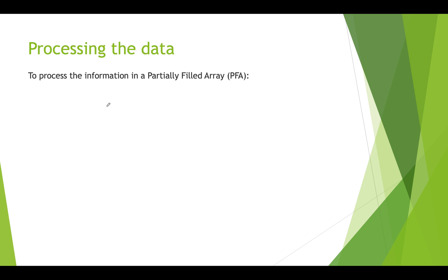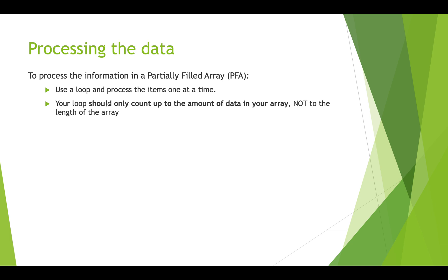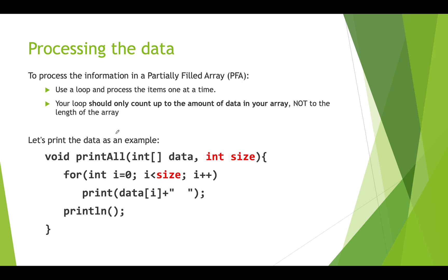Let's start with processing the data in a partially filled array. We use a loop to process items one at a time — we've done this before with regular arrays. If we want to print all the data, we might write a 'printAll' function that takes an int array as a parameter, but now we also pass in a second parameter — the integer 'size' that says how many slots are filled.